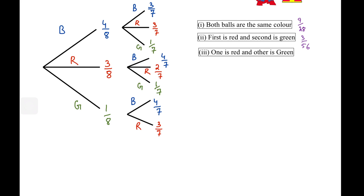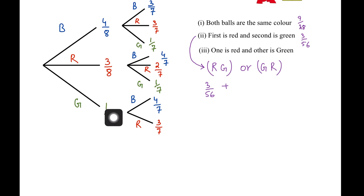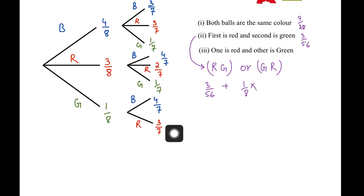Here we have part 3, which may seem very similar to part 2, but there's a catch. I can satisfy this by drawing a red in the first attempt and then drawing a green in the second — or I can satisfy this by drawing a green in the first and a red in the second. The probability of red first then green second is something we've already done: that's 3 over 56. Or — remember, 'or' translates into plus — the probability of drawing green first and red second: the odds of drawing green first are 1 over 8, times the odds of drawing red second, which are 3 over 7.